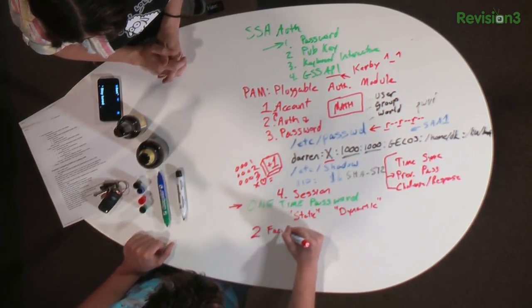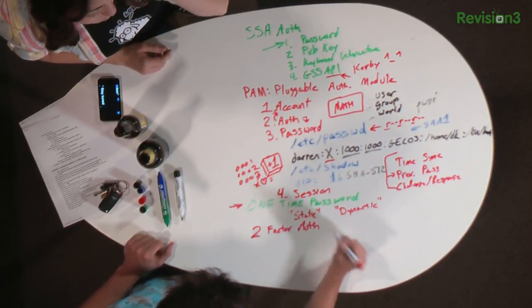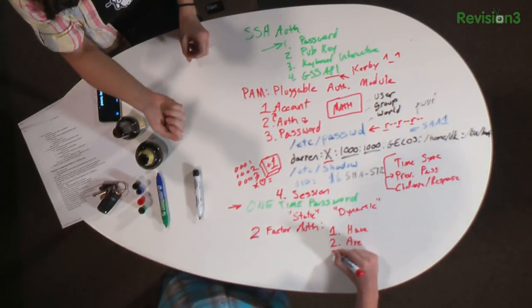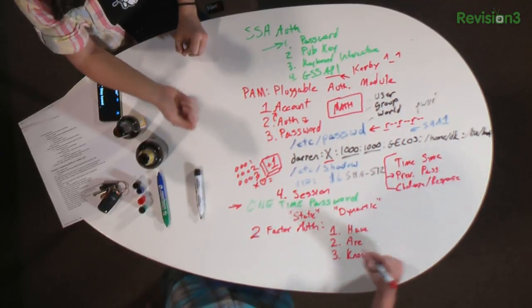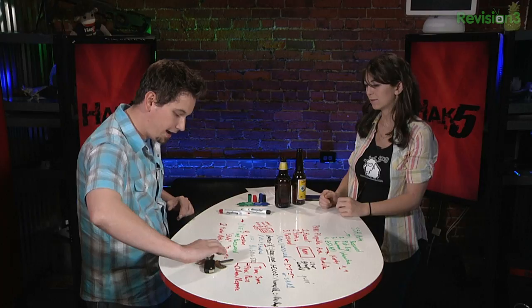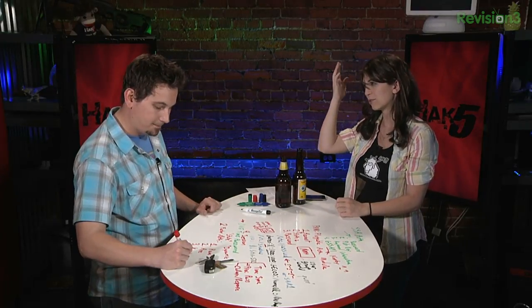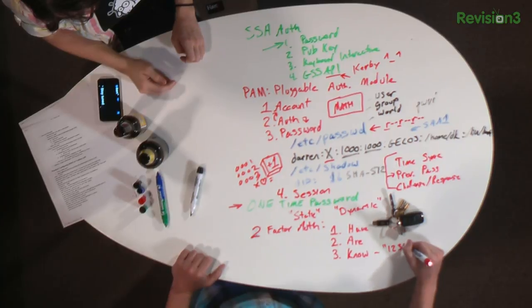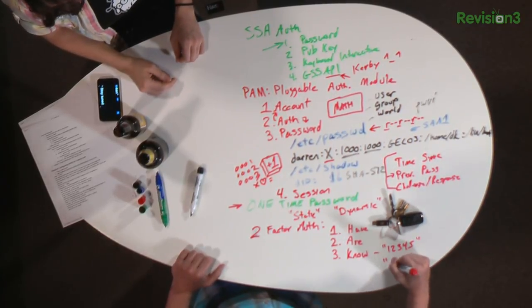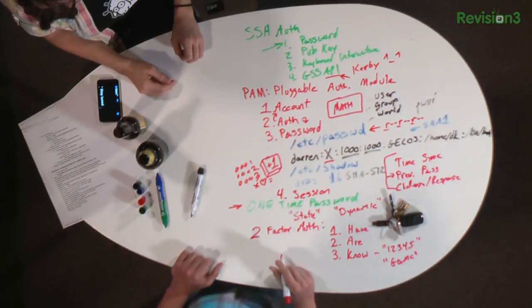Two-factor authentication is basically defined as something that uses two or more of three factors of authentication. Those three are: something you have — like your YubiKey; something you know — like your password; and something you are — biometric authentication like a fingerprint scan.